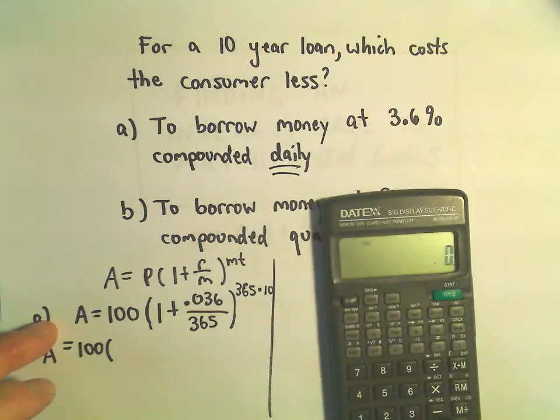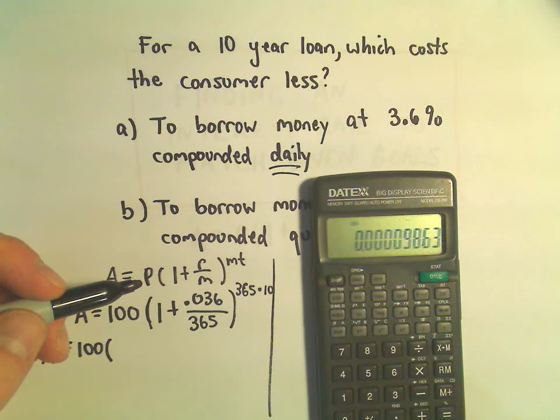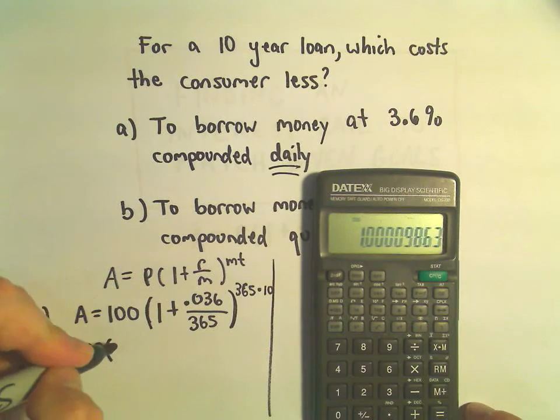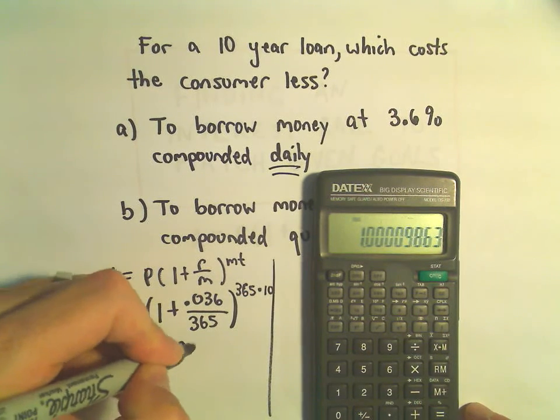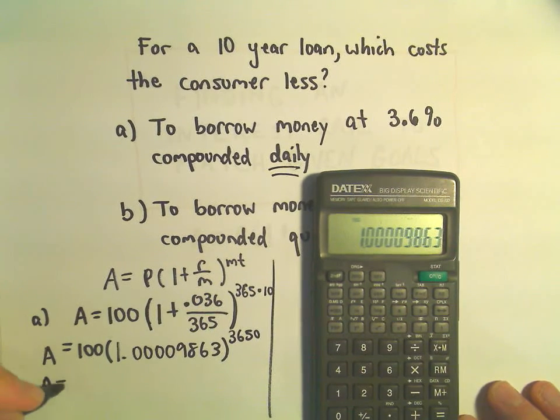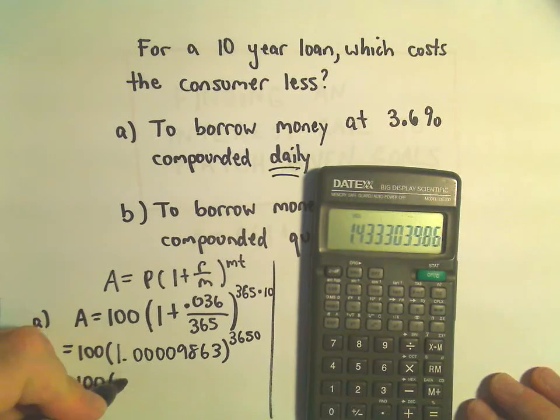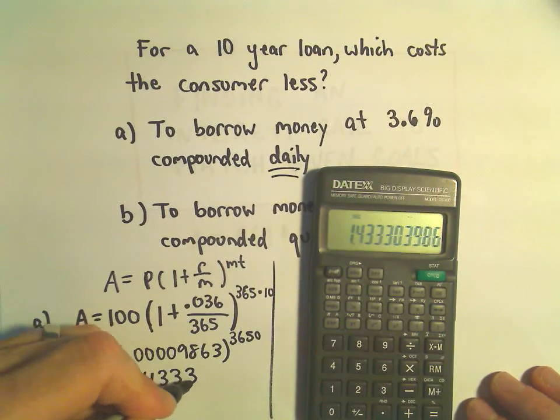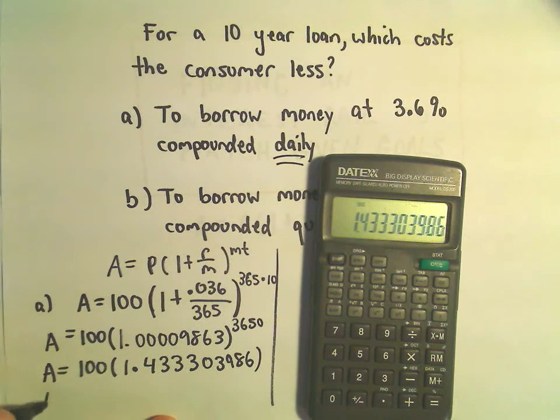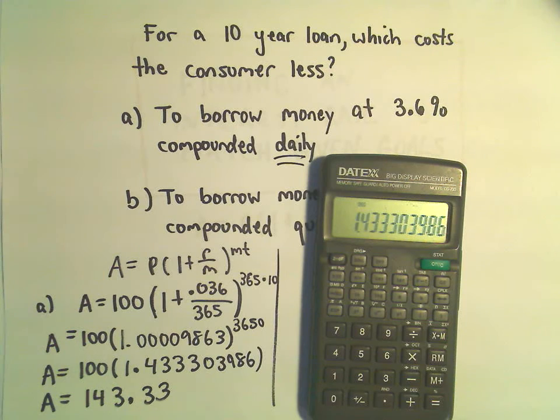So I'm going to do .036 divided by 365. Okay, so that's that very small number, .000409863. I'm going to add one to that. That's going to be the number inside the parentheses. So 1.000409863. It's going to be raised, if we multiply 365 by 10, we'll get 3650. So I'm going to raise this to the 3650 power. Okay, so I'm getting 1.433303986. And if you multiply that by 100, we're going to get, we'll just move the decimal place over twice. We'll get 143.33.